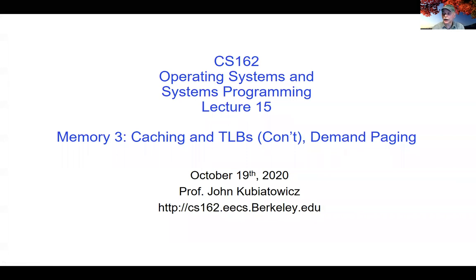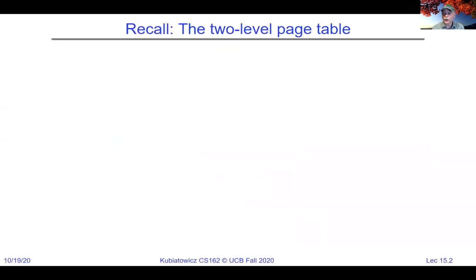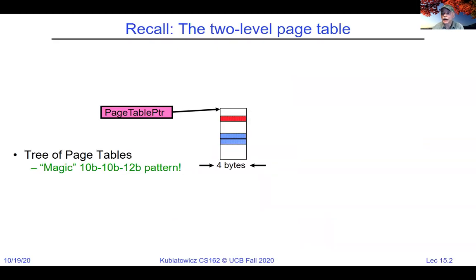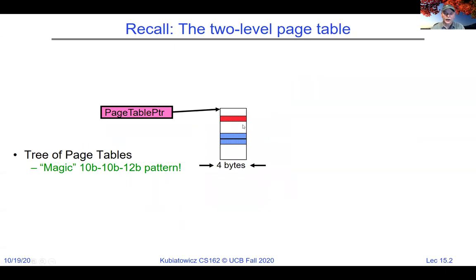We'll be talking about caching, just to remind you a bit from 61C. But before we get there, we've been talking a lot about virtual memory. One of the things I wanted to show you was what I like to call the magic two-level page table, which works when you have a 32-bit address space with four-byte PTEs — page table entries.